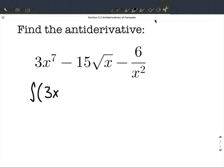So the first term is going to stay the same, minus 15, and then we can rewrite the square root as x to the 1 half power. And finally, minus 6, we can move that x squared up to the numerator by using a negative exponent. And we're going to be integrating with respect to x.